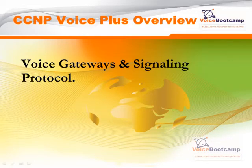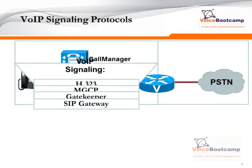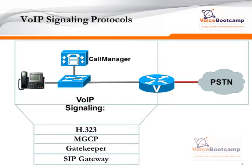Signaling protocol is one of the most important parts of the unified communication infrastructure. It provides a set of instructions between how two devices will communicate and the capabilities that they can support. The signaling protocols that we will talk about are H323 protocol, MGCP — Media Gateway Control Protocol — gatekeeper, and SIP gateways.